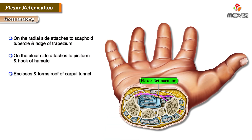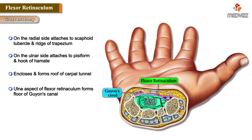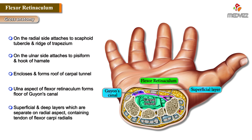The flexor retinaculum encloses and forms the roof of the carpal tunnel. The ulnar aspect of the flexor retinaculum forms the floor of Guyon's canal. Its superficial and deep layers are separate on the radial aspect, containing the tendon of flexor carpi radialis.